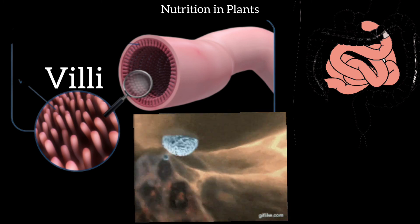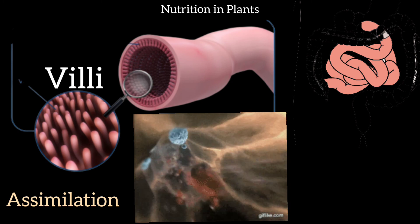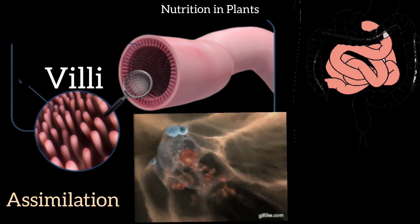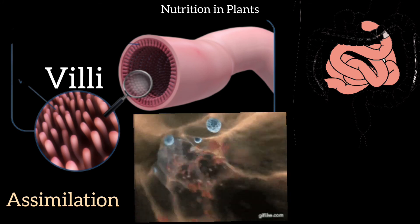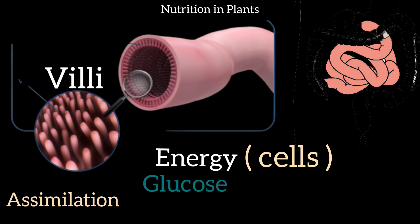Nutrients in liquid form are carried by the blood to the whole body — this is called assimilation. Glucose reaches our cells, and in the cells, glucose is combined with oxygen and converted into carbon dioxide and water, releasing energy. Our body uses this energy.